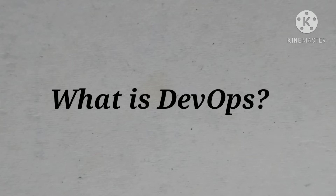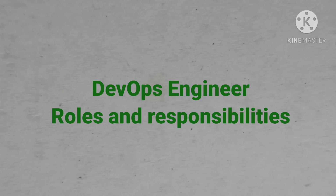Before talking about roles and responsibilities of a DevOps engineer, we must know about DevOps. DevOps consists of two words: development and operation. DevOps is a set of practices or concepts that combines software development and IT operations, and it aims to shorten the system development lifecycle and provide continuous delivery with high software quality.